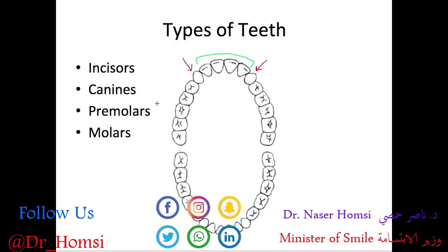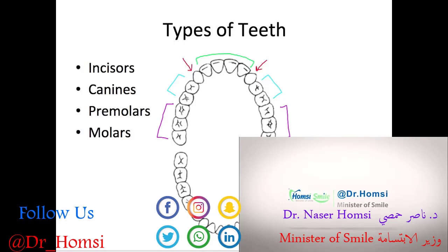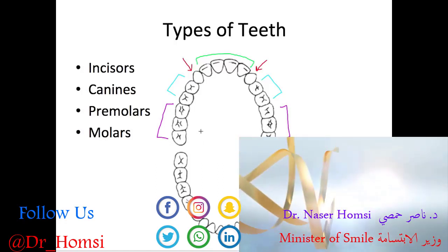The premolars are the next two teeth back from the canines, and they're useful for tearing, holding, and grinding food. Finally, the back three teeth are referred to as the molars — the first, second, and third molars — and the third molars are usually referred to as wisdom teeth. The premolars and molars combined are referred to as the posterior teeth because they're located in the back.